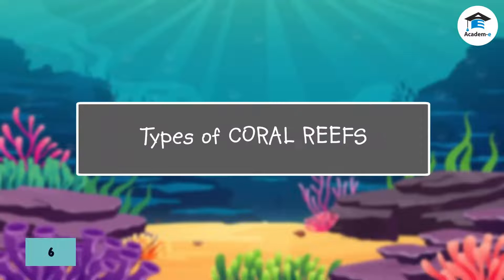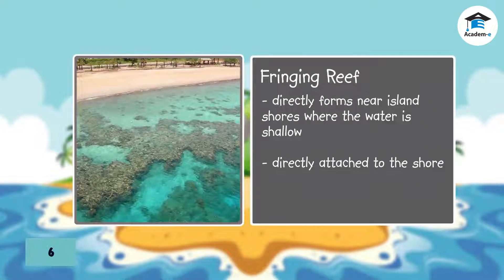Coral reefs vary based on the physical characteristics that form the reef. A fringing reef is a reef that directly forms near island shores where the water is shallow. It is directly attached to the shore.